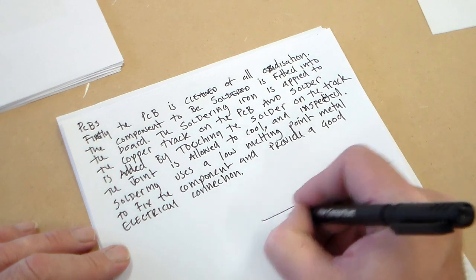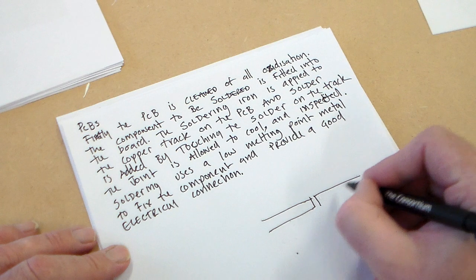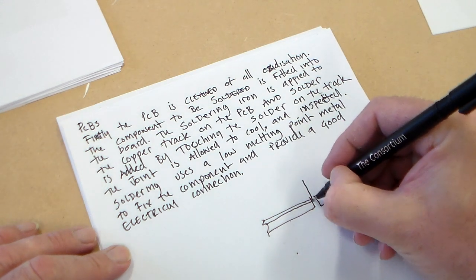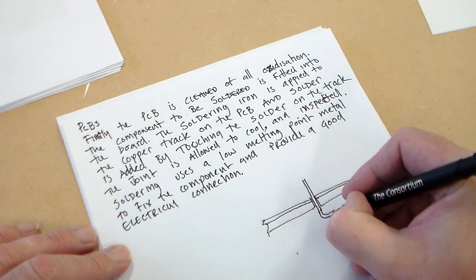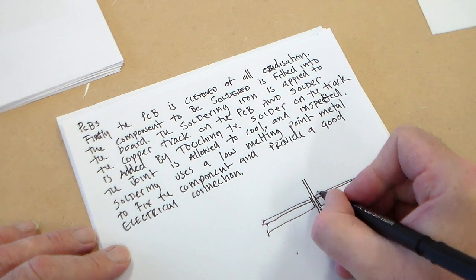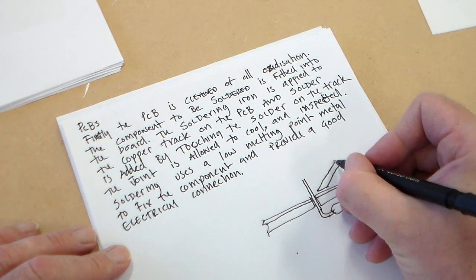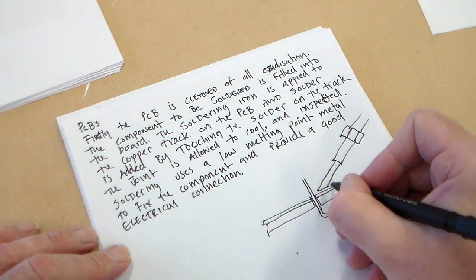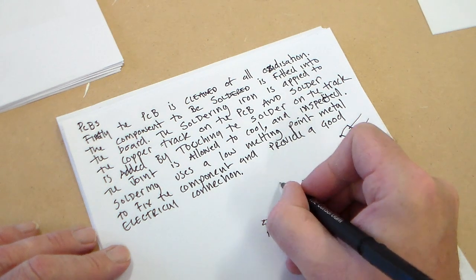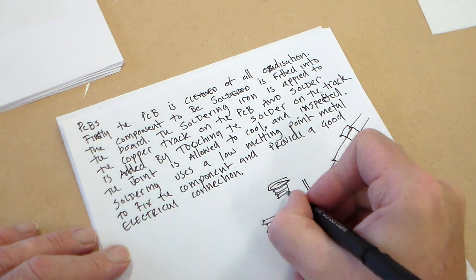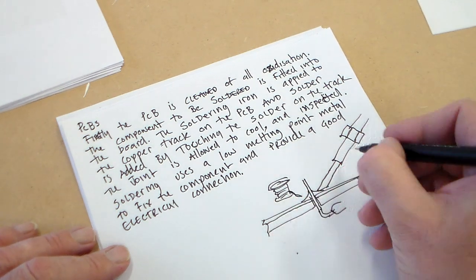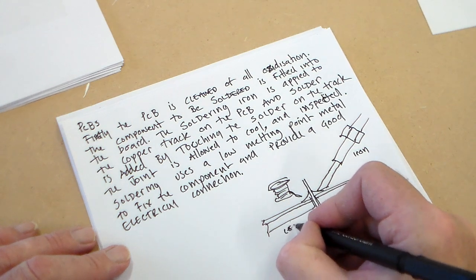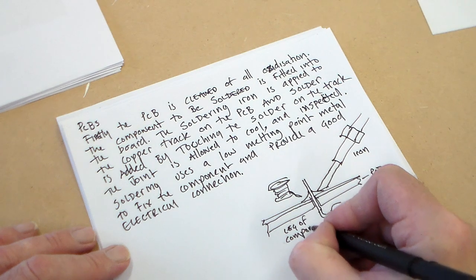For our joint here, we can draw a circuit board, and a section of our circuit board, and a copper track on top. We've got the leg of our component coming up here. The soldering iron touches here, the tip of the soldering iron. We've got a solder joint here, and a solder just added there. So, we can put the iron and a component.